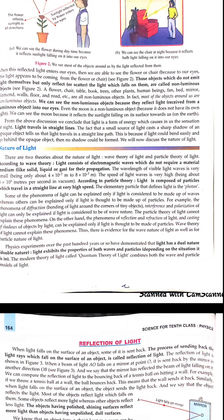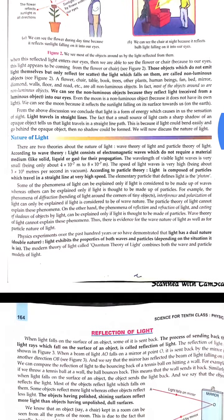Now let us start the next topic: the nature of light. Electromagnetic wave — what does this word mean? It is a form of wave, so light should be a wave. Light consists of electromagnetic waves which do not need a material or medium to travel. So the first property of light is that light does not need a medium to travel — it just propagates without a medium. We can see the sun rays entering our room coming in the form of a straight line path. So the second property of light is that light tends to travel in a straight path.